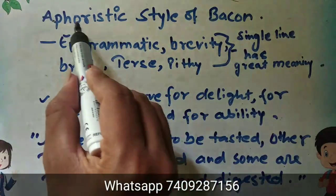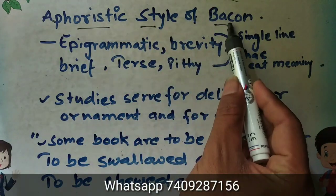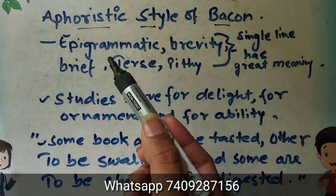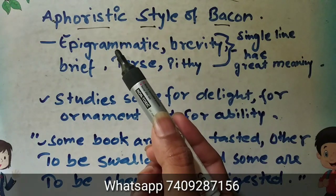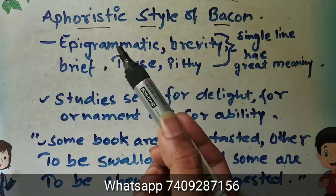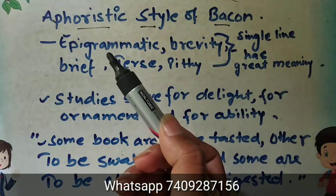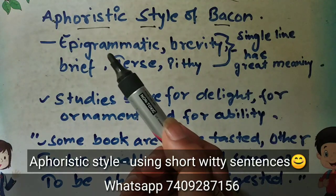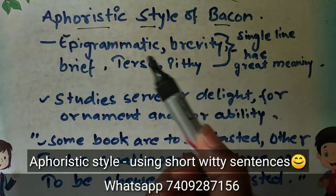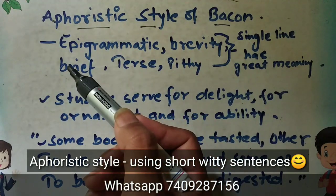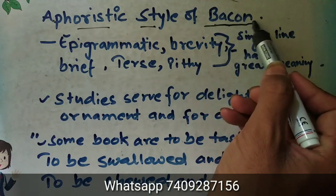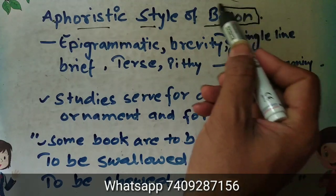So first, let's go through what is aphoristic style by Bacon. Bacon was a fan of Seneca — his style was related to, we can say, the Seneca style. We know that Cicero was the champion of prose writing in Latin, but later Bacon found that this style would not work in English.